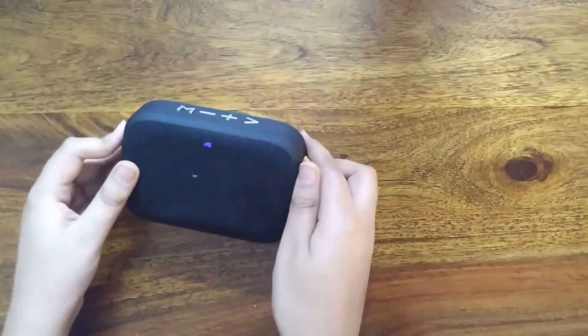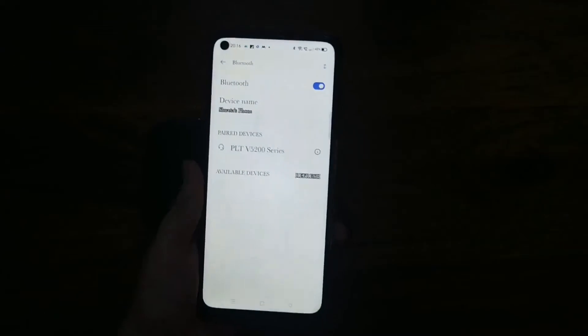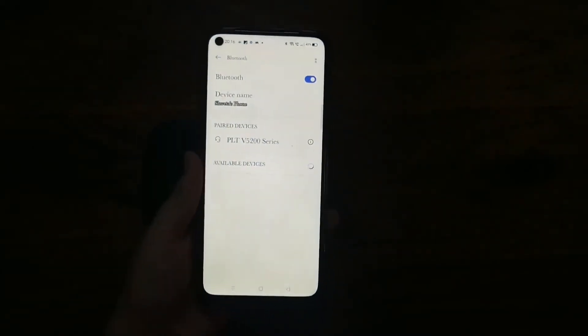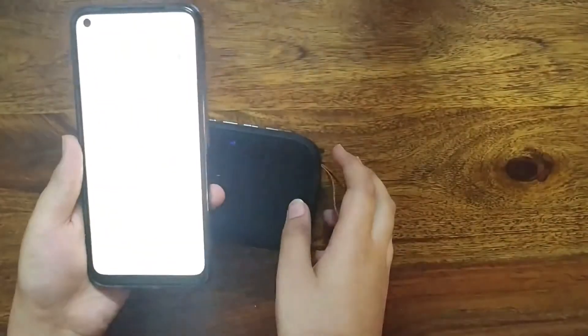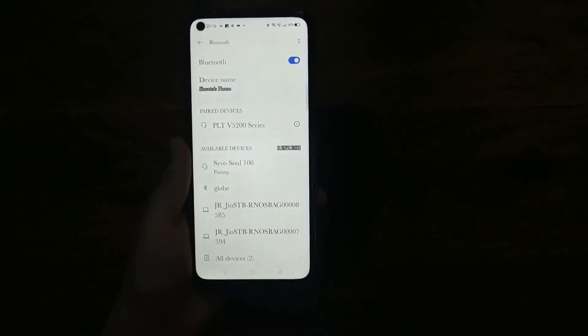Bluetooth mode. Okay, this is in Bluetooth mode. Now let's pair it. These available devices are showing, so you can see all of it. Syvo Soul 100. We click this.